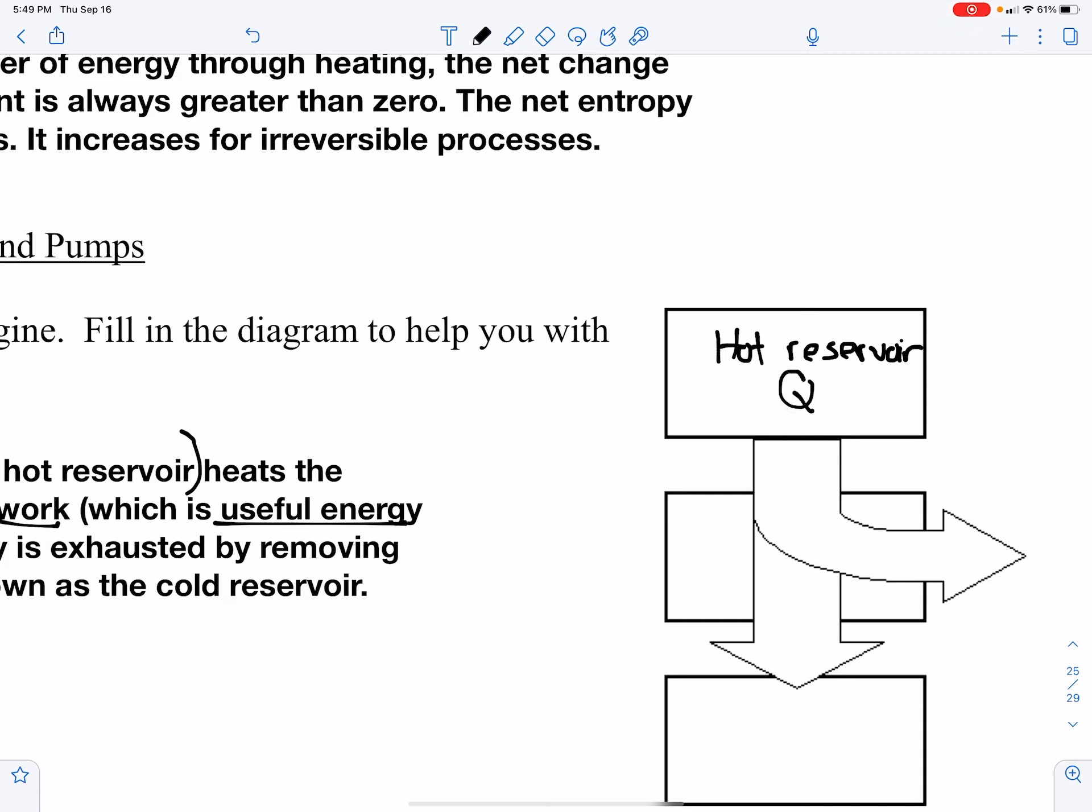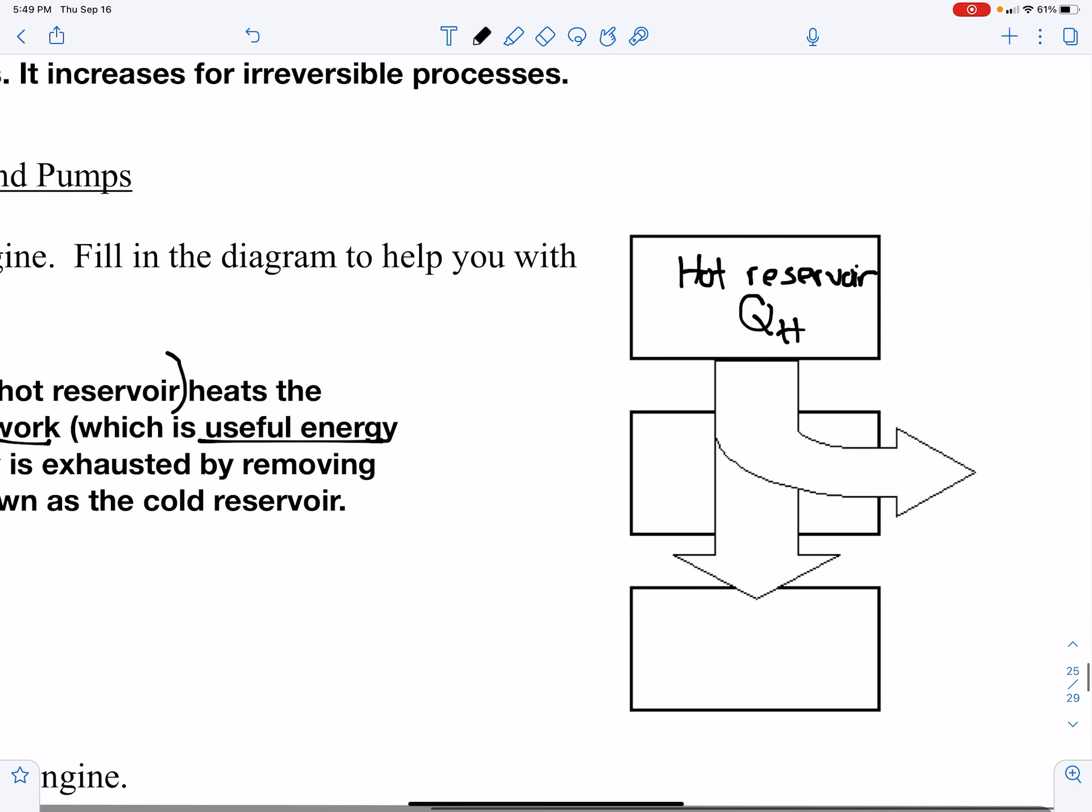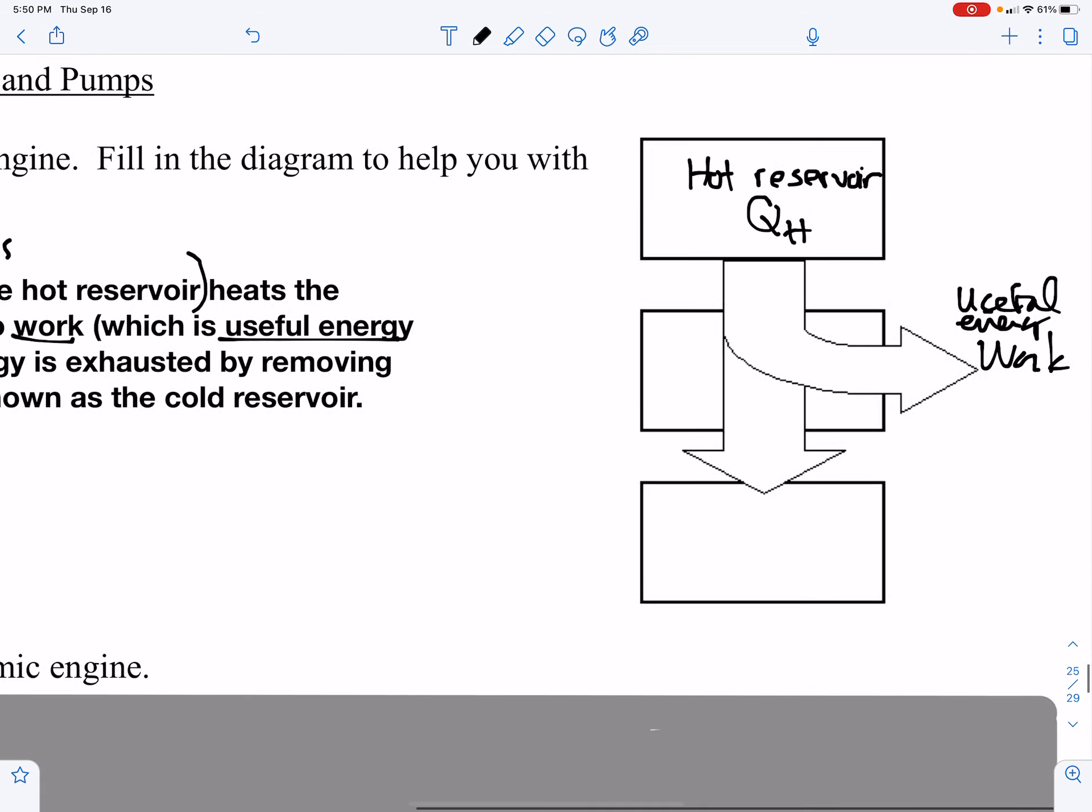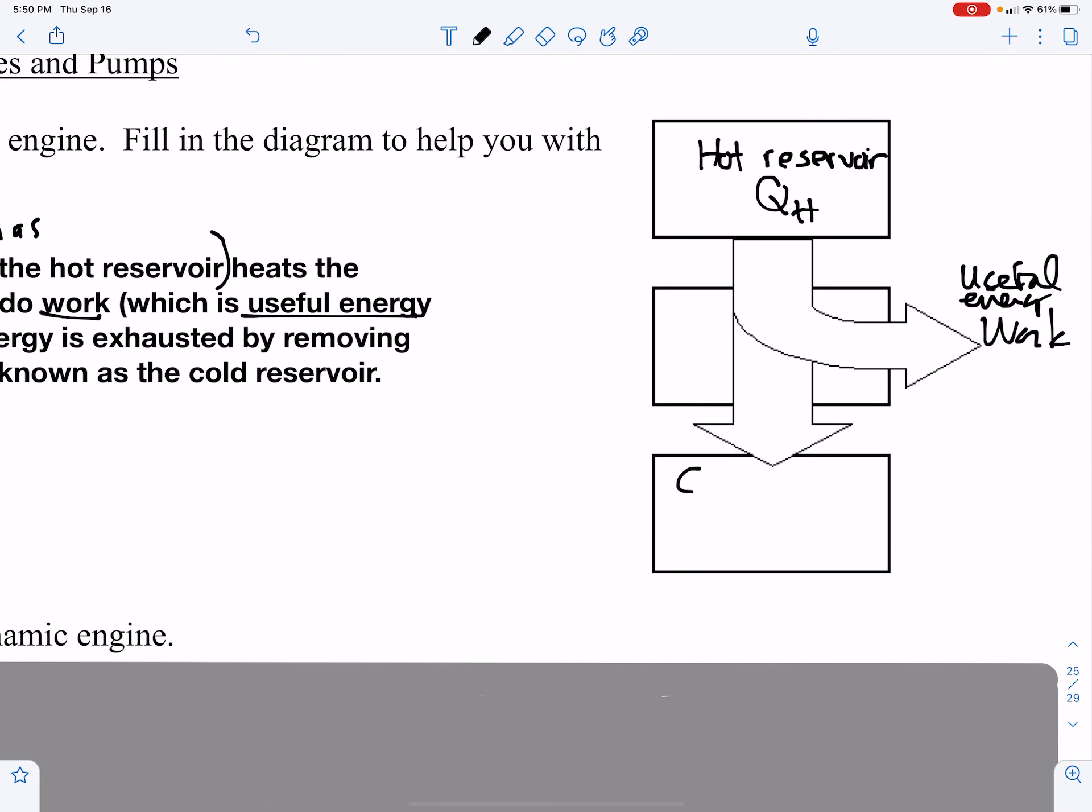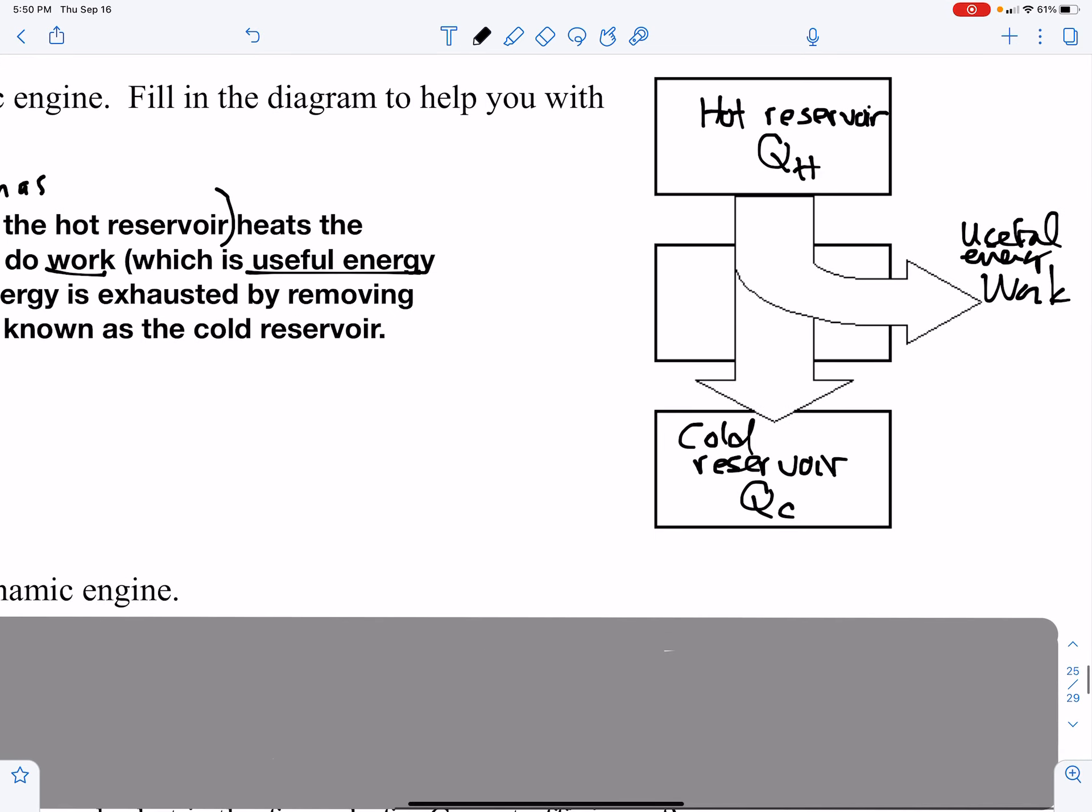So this right here would be the hot reservoir, a region of higher temperature. We're going to get heat from that region. We're going to call that QH, heat coming in from a hot reservoir. Work is being done. That's the useful energy. And the heat is being expelled to a region of lower temperature known as the cold reservoir, which we will label QC.